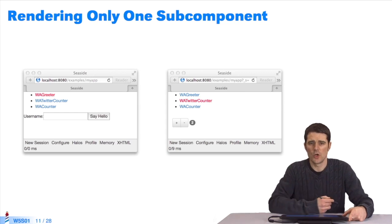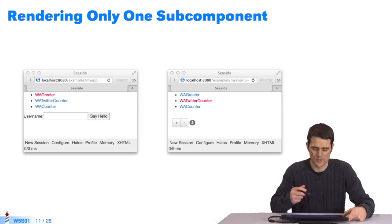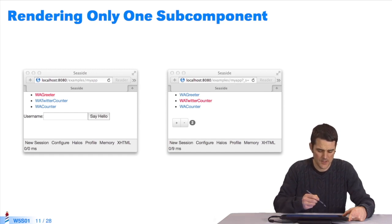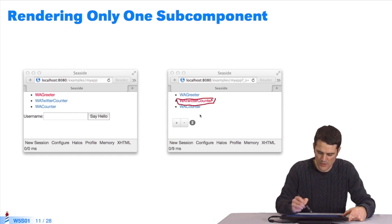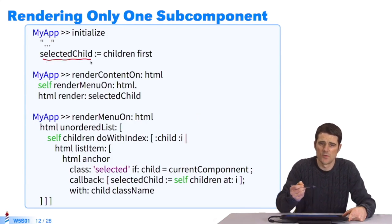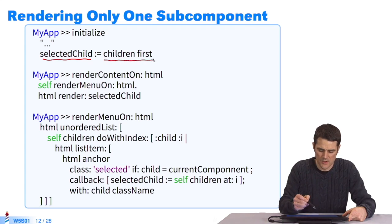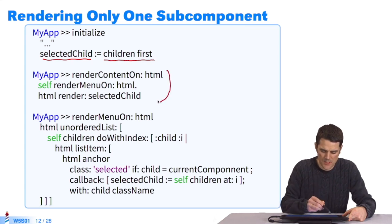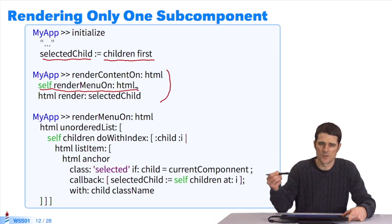So now, there's one stage further. We don't want all the components at once on the webpage. We want one at a time, a menu, for example, to select which subcomponent we want displayed. Typically, I only want to show the greeter, and when I click on the Twitter counter here, I'm only going to display the Twitter counter. How do we make this application? It's easy. I add an instance variable in my MyApp application, which is called the selected component, the selected child. By default, I'll initialize it to the first subcomponent. In the renderContentOn method, I've modified it. I'll display one menu, giving me the possibility to select which subcomponent I display. Then, I do HTML render, but only of the subcomponent I want to display.